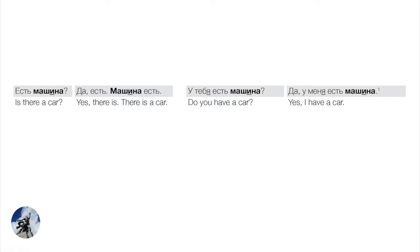Let's review some simple examples. Есть машина? — Is there a car? Да, есть. Машина есть. In all those examples we use есть because that's the point of the question and the answer. If we say машина есть, we're emphasizing that the car exists. We can also add a у construction for possession: У тебя есть машина? — Do you have a car? У меня есть машина. The noun машина stays in the nominative throughout because it's the subject of есть.